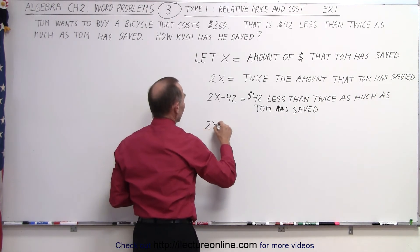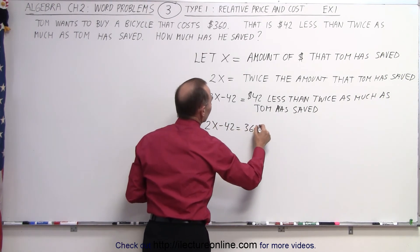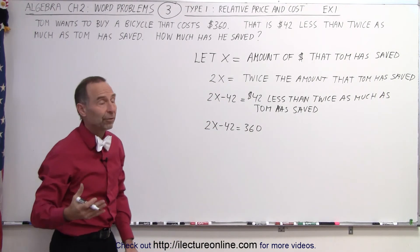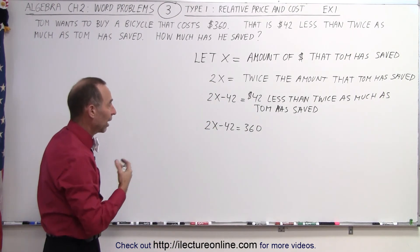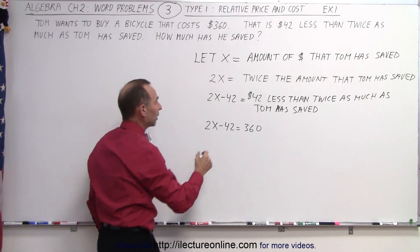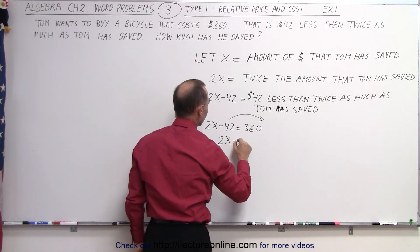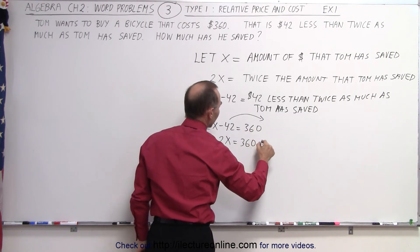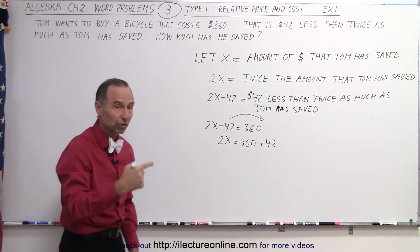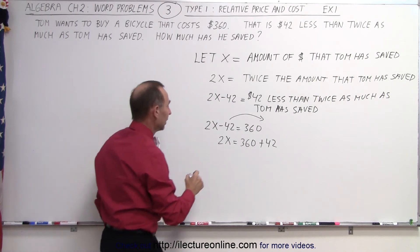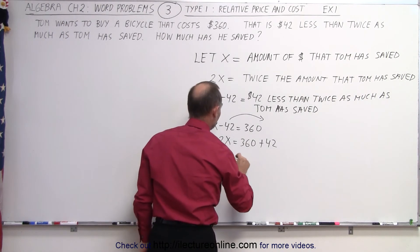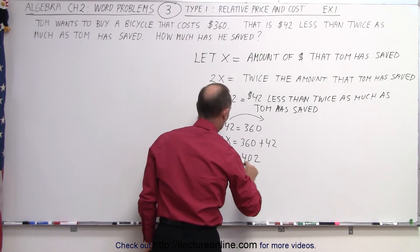So, 2X minus 42 equals 360. And, now we're ready to figure out how much he has saved. We can now solve for X. So, we do that by first moving the 42 to the other side. So, 2X is equal to 360 plus 42, because when you have a term that changes the other side, it changes the sign. That means that 2X is equal to 402.